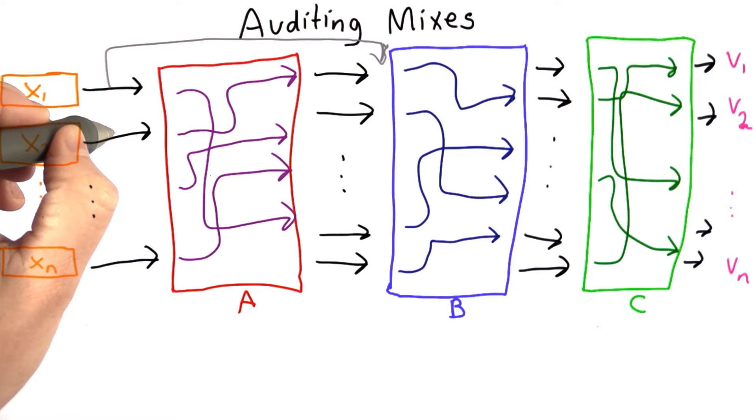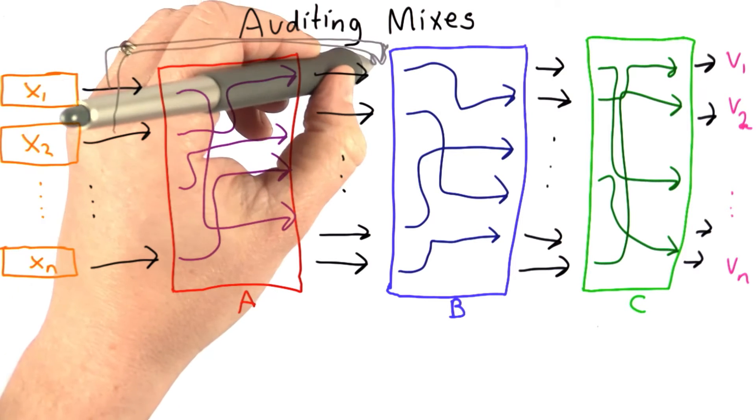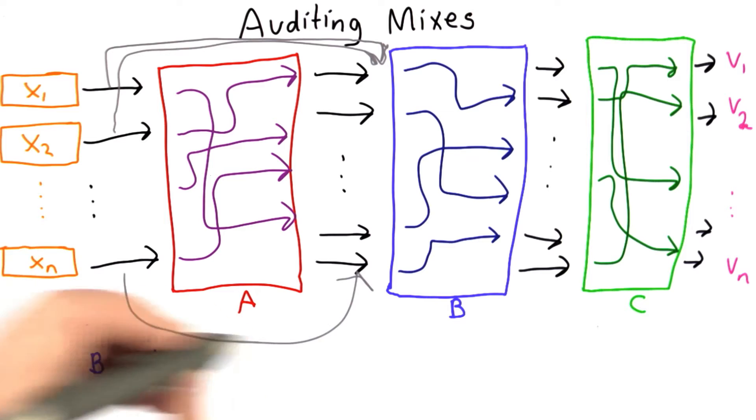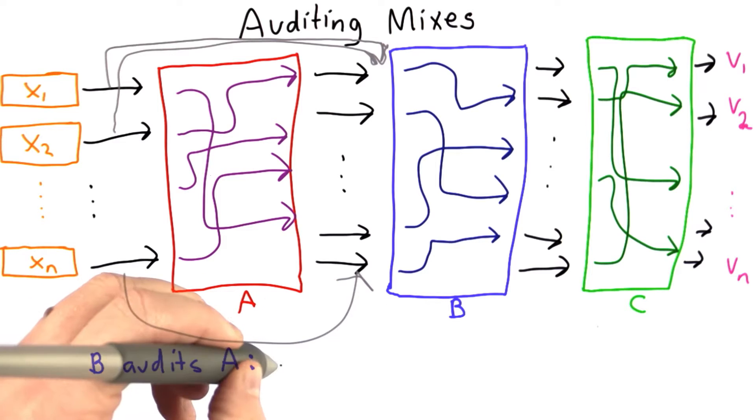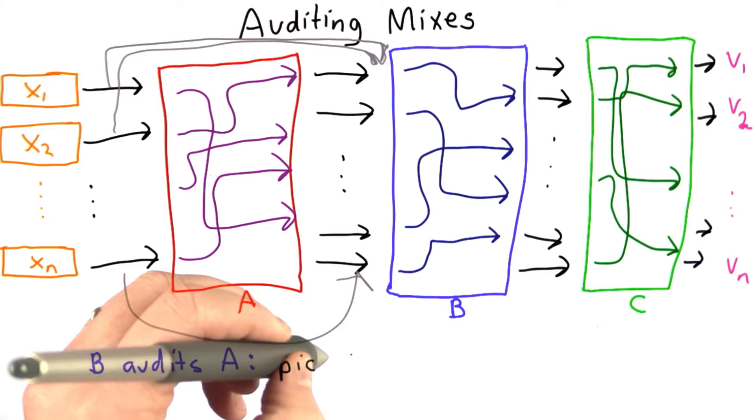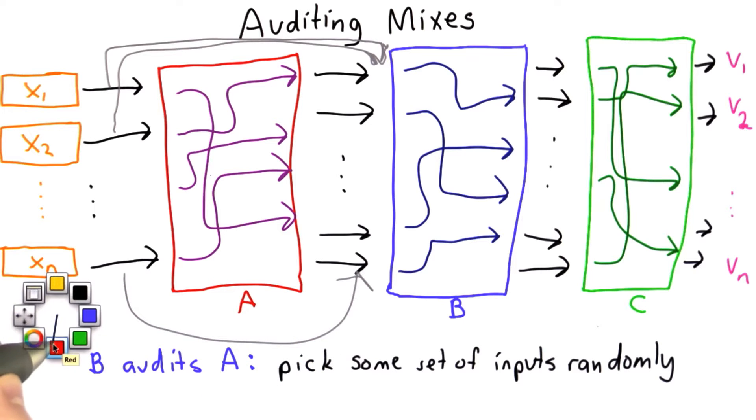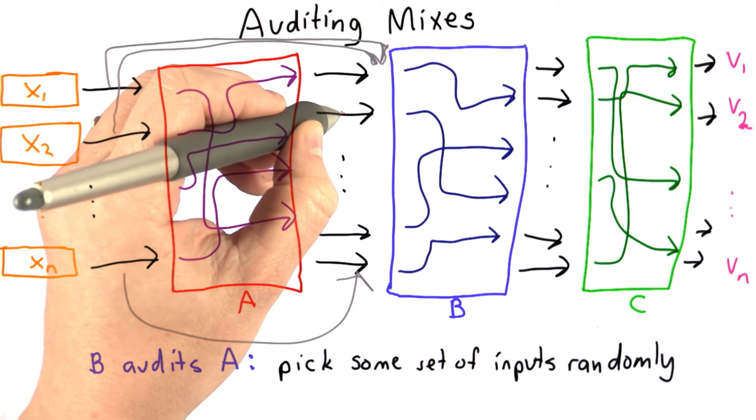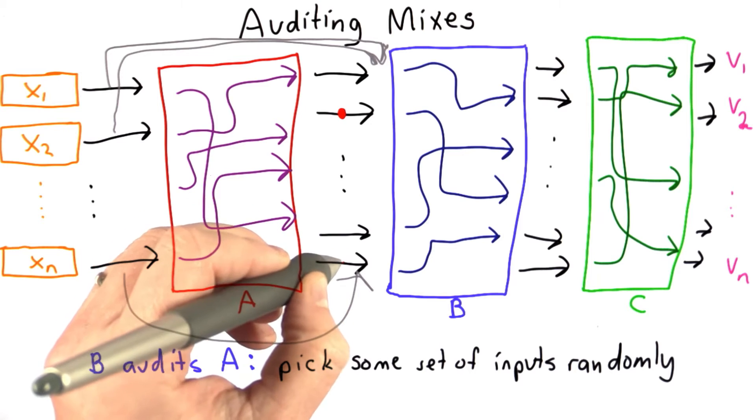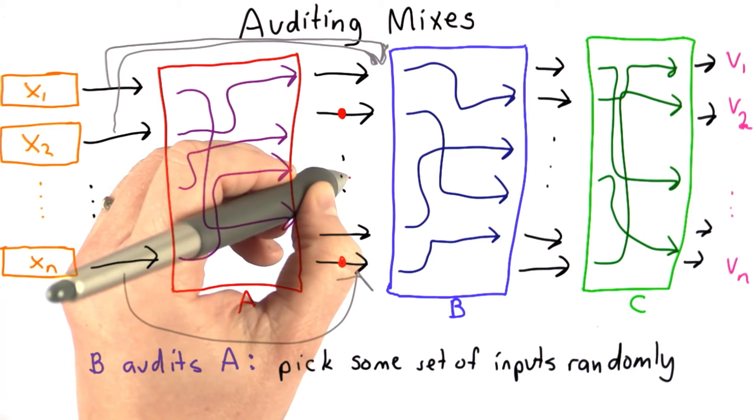So all of the incoming votes go to the next two steps. And now B is going to audit A. And it does that by picking some random set of inputs. So let's say it picks this one, and it picks this one, and it picks some of the ones in here.